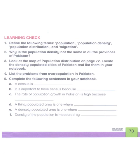Assalamu alaikum. We will now do Chapter 11 learning checks, which are on page 73. The first question is: define the following terms — population, population density, population distribution, and migration. Let's look at the definitions one by one.